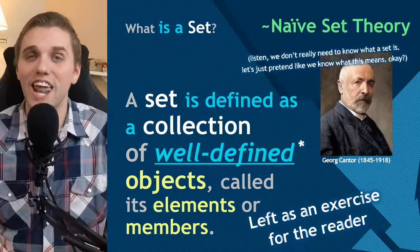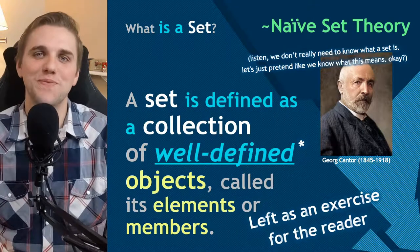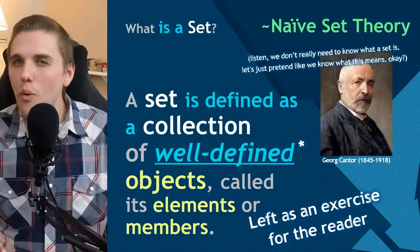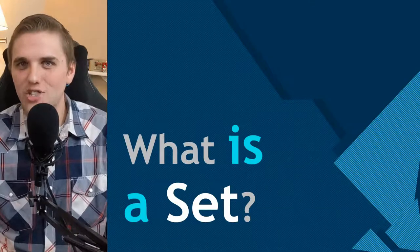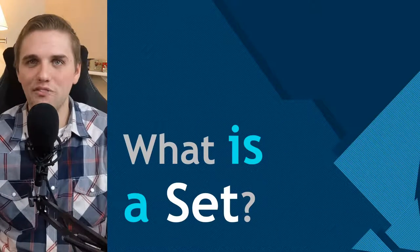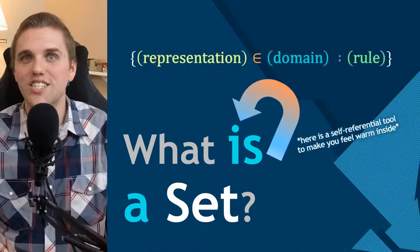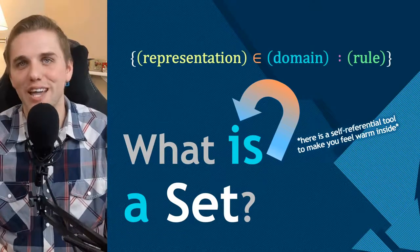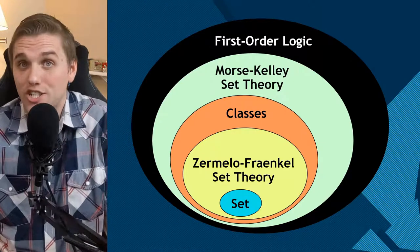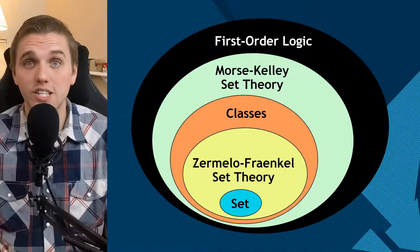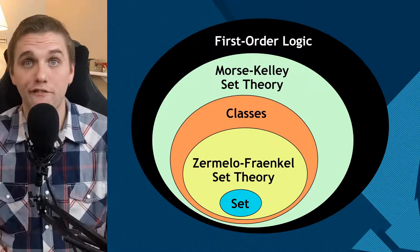So yes, this was literally an exercise that Cantor left for mathematicians. Think about what we're doing here with this question: we're taking this question and not answering it, but during the process of not answering it we get a self-referential tool that makes us feel good on the inside — that's naive set theory. I could go on to talk about the ZFC axioms, classes, Morse-Kelley set theory, or first-order logic, but instead I'm going to leave this as an exercise for the reader — and for myself — because I want to eventually cover the ZFC axioms in this channel. Thanks for watching this video and I'll see you all next time.